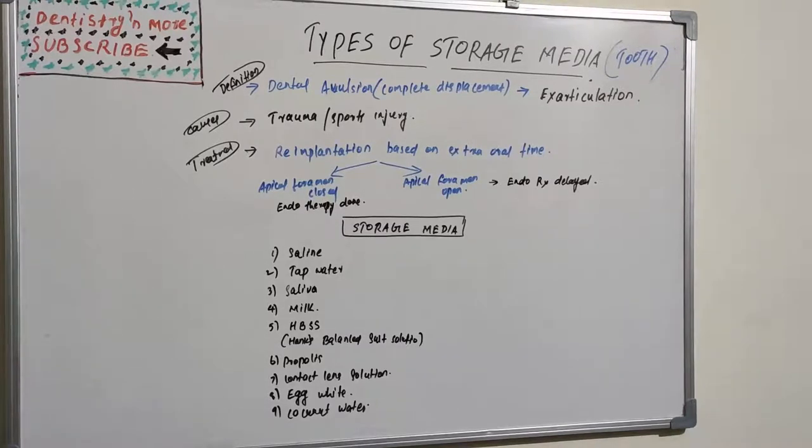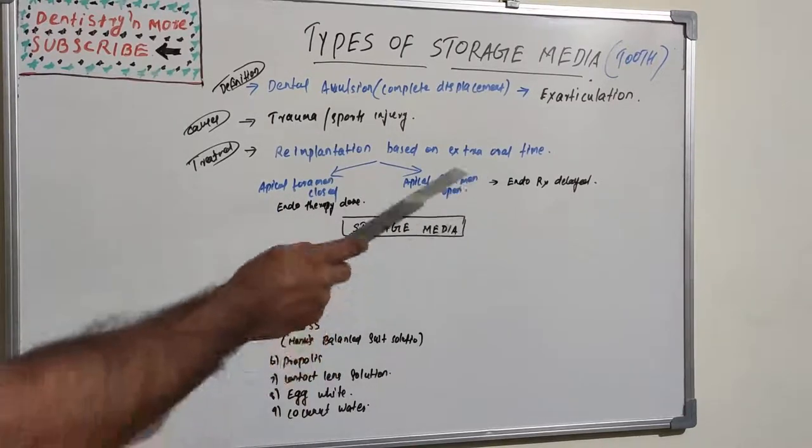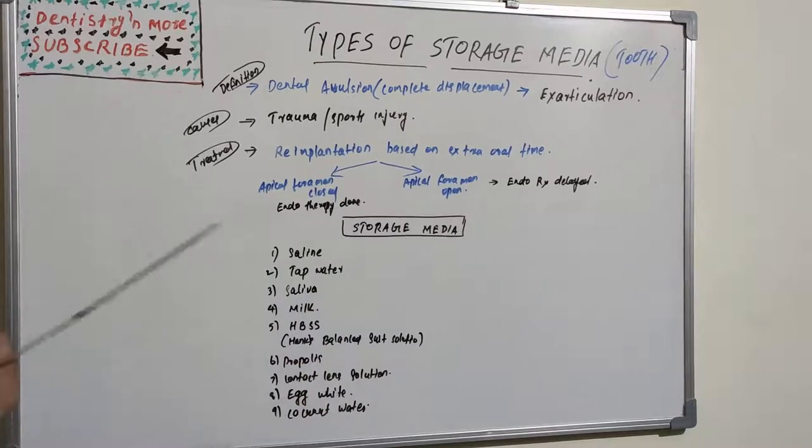There will be bleeding socket with missing tooth and radiographic features will show the empty socket and a bone fracture. The treatment depends upon the apical foramen closure. If it is closed we can go for endodontic therapy, and if it is not closed we need to wait for the closure of apical foramen.